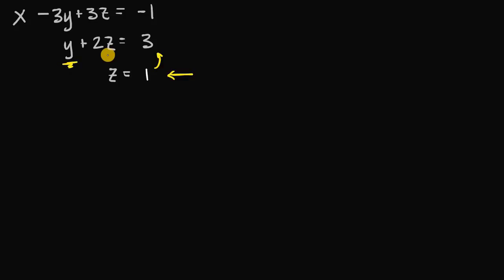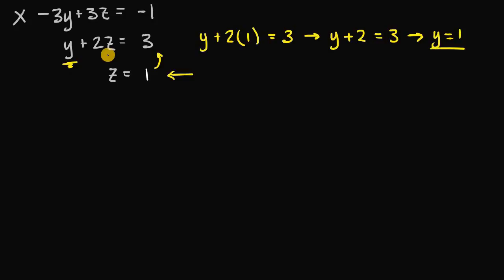If we plug z into the second equation, we get y plus 2z, which is 1, is equal to 3. If we simplify this, we get y plus 2 is equal to 3. And if we solve for y by subtracting 2 on both sides, we get y is equal to 1. So we just used the process of back substitution to solve for the unknown variable y.